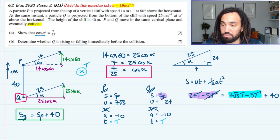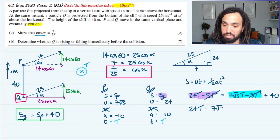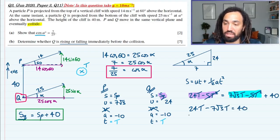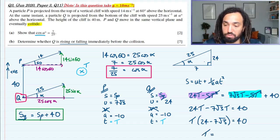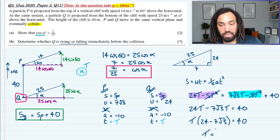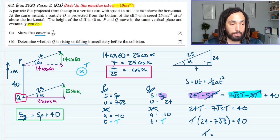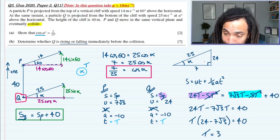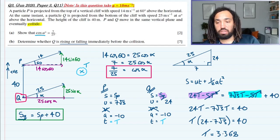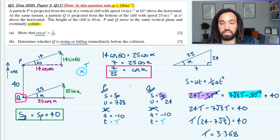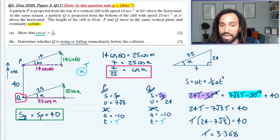We can cancel minus 5 T squared from both sides, and we can bring over the 7 root 3 T. We can factorize to get 24 minus 7 root 3, and then we can divide through by 24 minus 7 root 3, and we get an answer of 3.368.